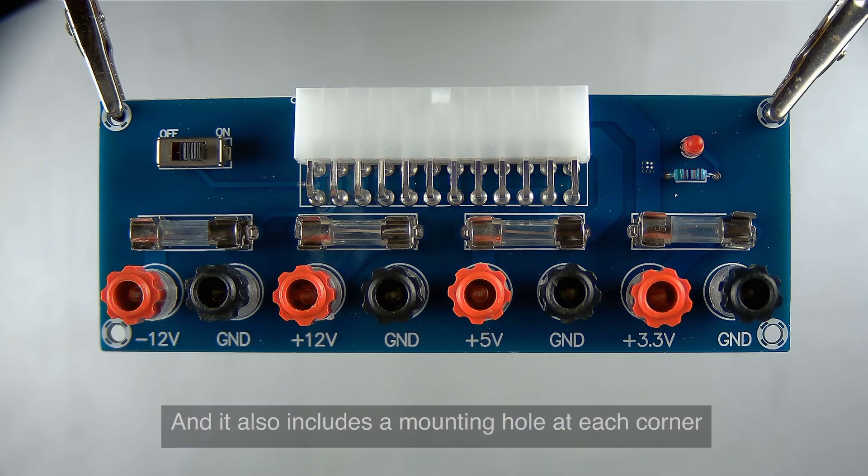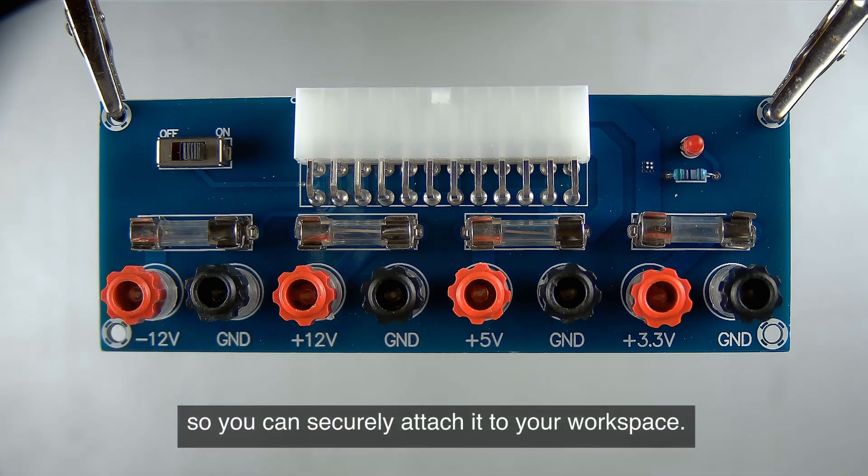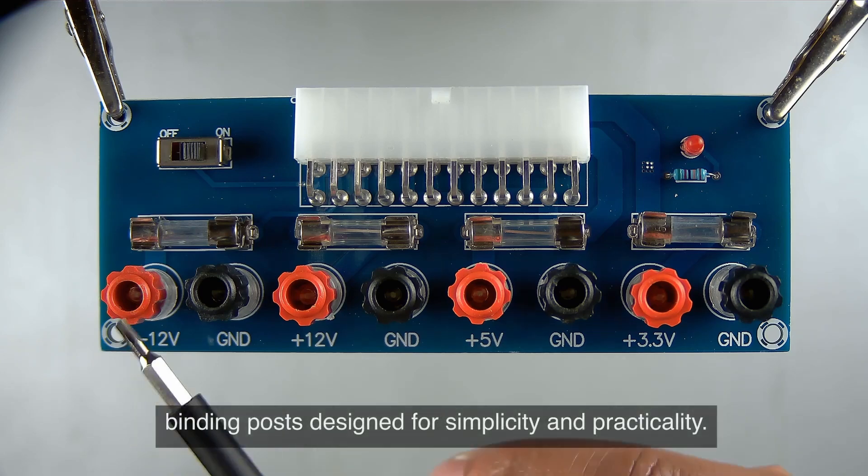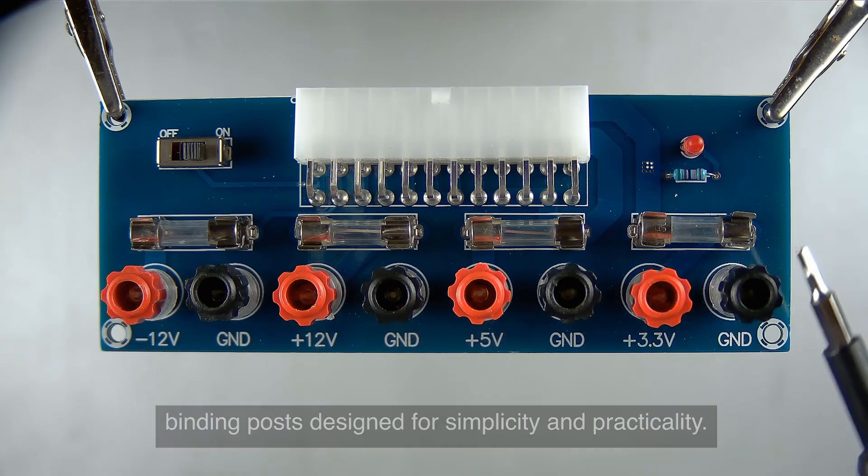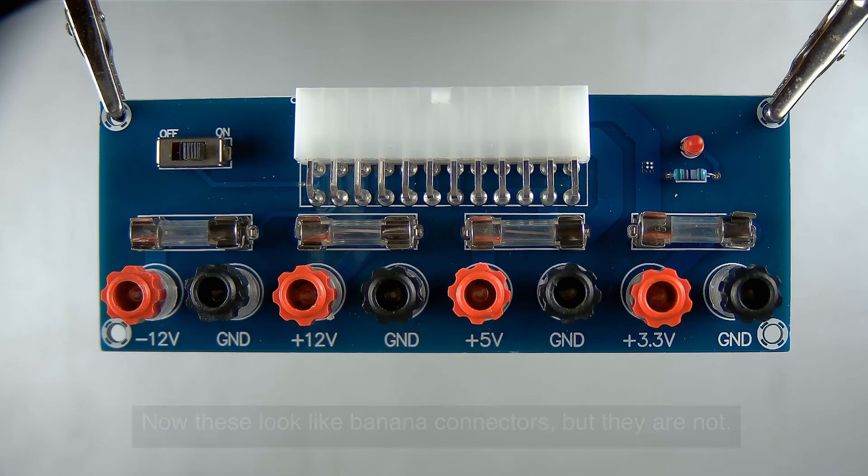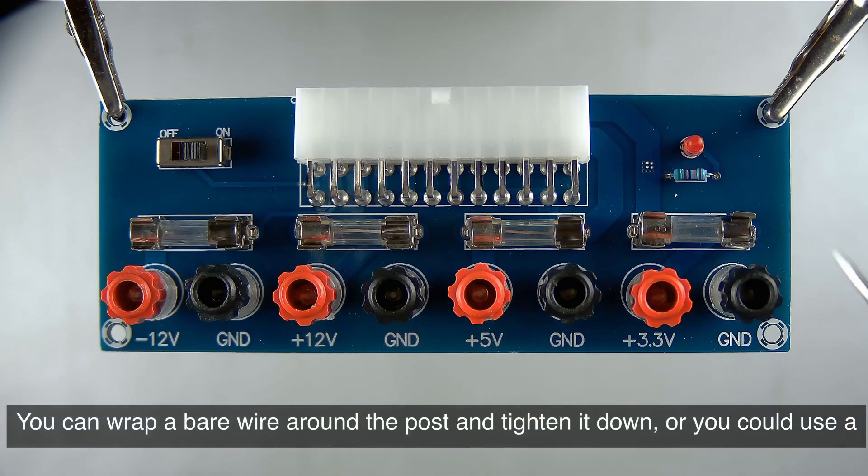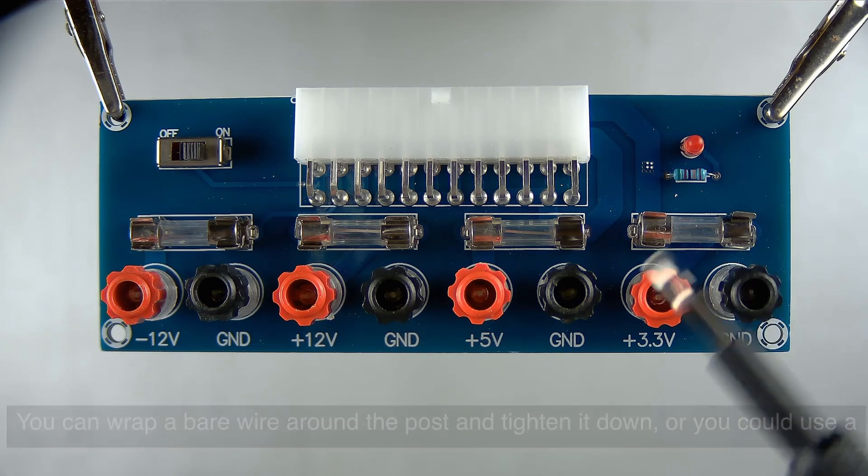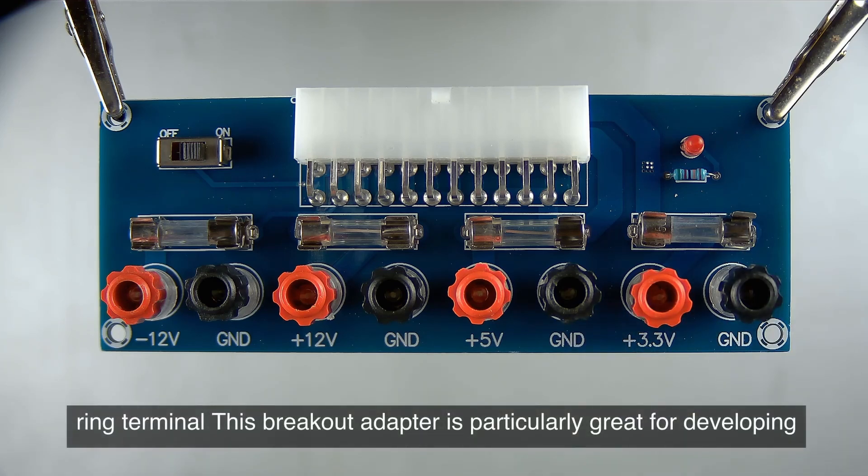Connection is made easy with the binding posts designed for simplicity and practicality. Now, these look like banana connectors, but they are not. You can wrap a bare wire around the post and tighten it down, or you could use a ring terminal. This breakout adapter is particularly great for developing electromechanical projects with motors or servos which might require more current.